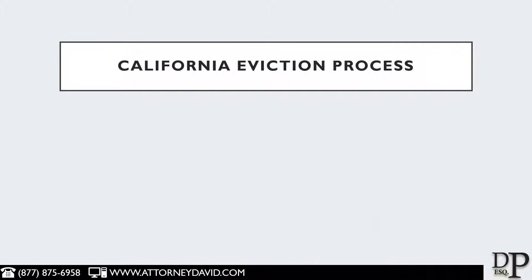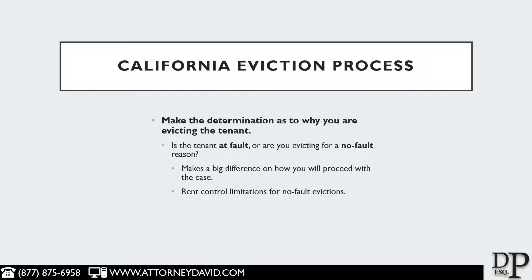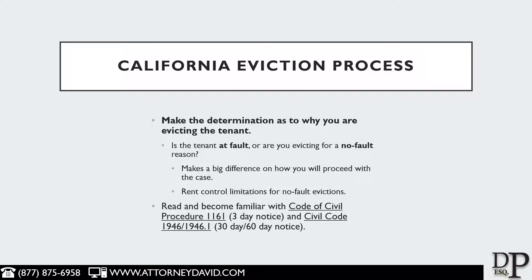It makes a big difference on whether the eviction is based on an at-fault tenant reason or a no-fault tenant reason, especially in rent-control jurisdictions. Many rent-control areas such as Los Angeles limit in a substantial way the ability of a landlord to evict a tenant for a no-fault eviction, and the landlord is going to have to pay substantial relocation costs to the tenant. You're going to want to read and become familiar with two different code sections: Code of Civil Procedure 1161 talks about at-fault evictions, and you would use a three-day notice in most cases. You also want to become familiar with Civil Code 1946 and 1946.1, which outlines no-fault tenant evictions, most commonly used with a 30-day or a 60-day notice to terminate the tenancy in California.